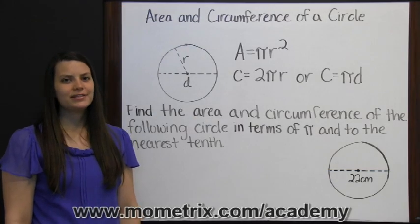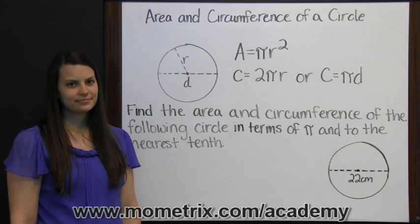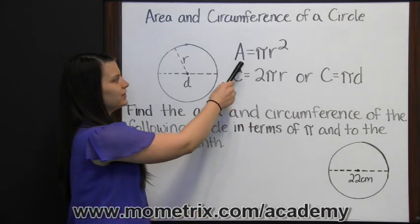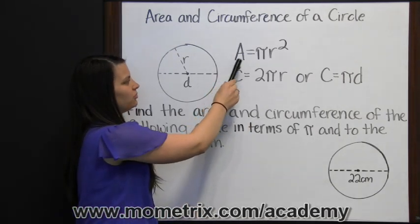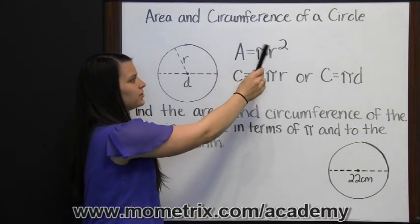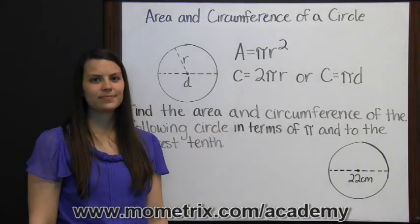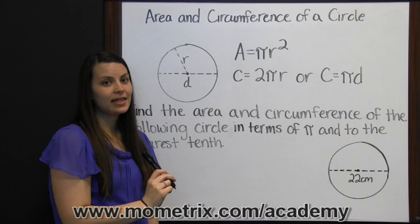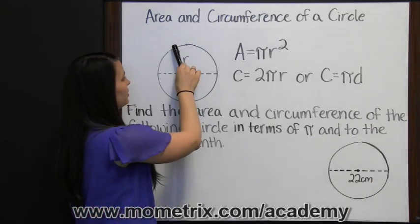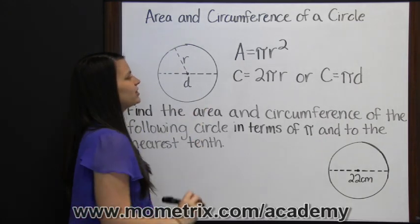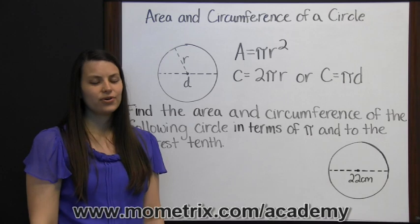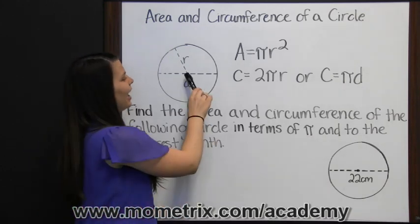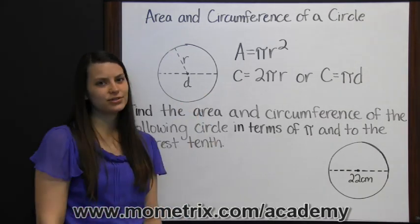Area and circumference of a circle. Area of a circle is found by multiplying pi times the radius squared. The radius of a circle is a segment that has its endpoints on the circle and on the center of the circle, or you can think of it like it goes halfway across the circle.